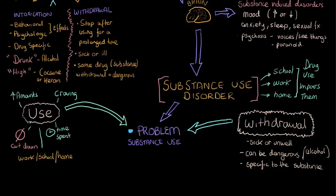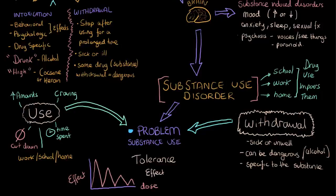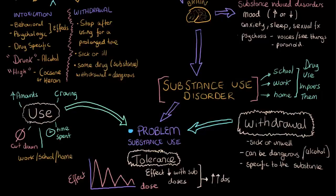Finally, the last thing I want to mention is the presence of something called tolerance. If this is the effect and this is the dose, the effect of the drug decreases with subsequent doses — your body adapts to or builds a tolerance to the substance. So what people do to overcome this tolerance is they keep increasing the dose or the amount of substance they use in order to achieve the same level of intoxication. The development of withdrawal symptoms and the development of tolerance all suggest that we have a problem.